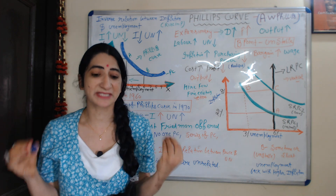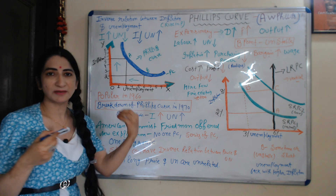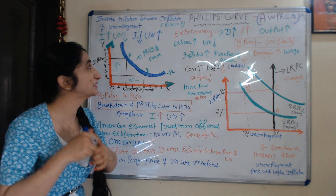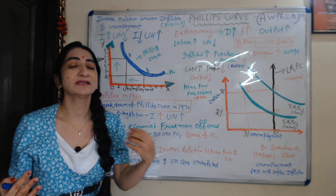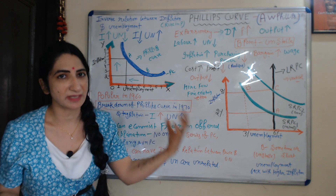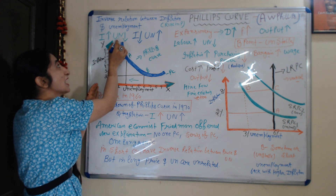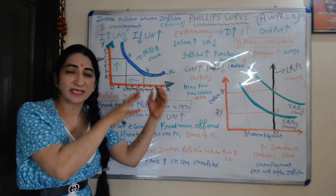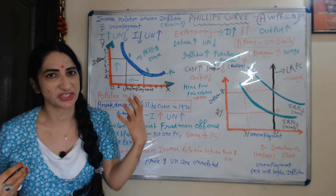The Phillips Curve basically states a stable and inverse relation between inflation and unemployment. As we all know, inflation means a rise in the price of goods and services. According to the Phillips Curve, when inflation rises, unemployment will fall, and when inflation falls, unemployment will rise — meaning they have an inverse relation with each other.